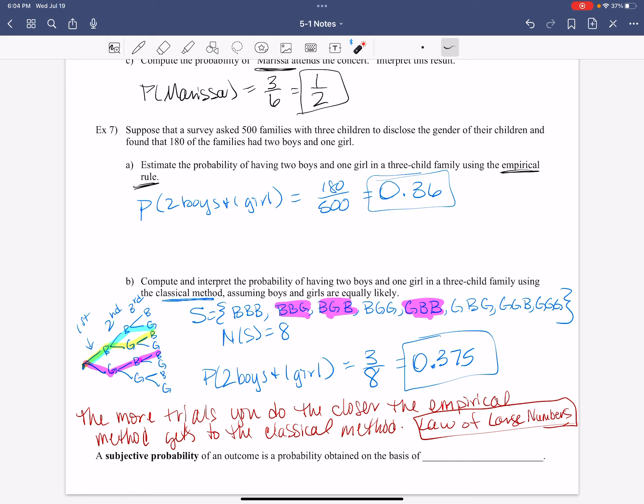So a subjective probability, our last little piece of vocab, a subjective probability of an outcome is a probability obtained on the basis of personal judgment. That's what makes it subjective. What do I think about this? That's what I'm asking. What do I think about this? That is personal judgment. And that's what makes it subjective.